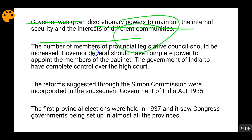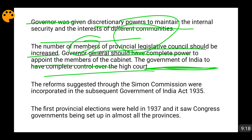The commission also recommended that the governor be given discretionary powers to maintain internal security and safeguard different communities' interests. The number of members in provincial legislative councils was increased. The Governor-General was given complete power to appoint members of his cabinet. Importantly, it recommended that the Government of India have complete control over the High Court — which was problematic since the judiciary should function independently of the executive.